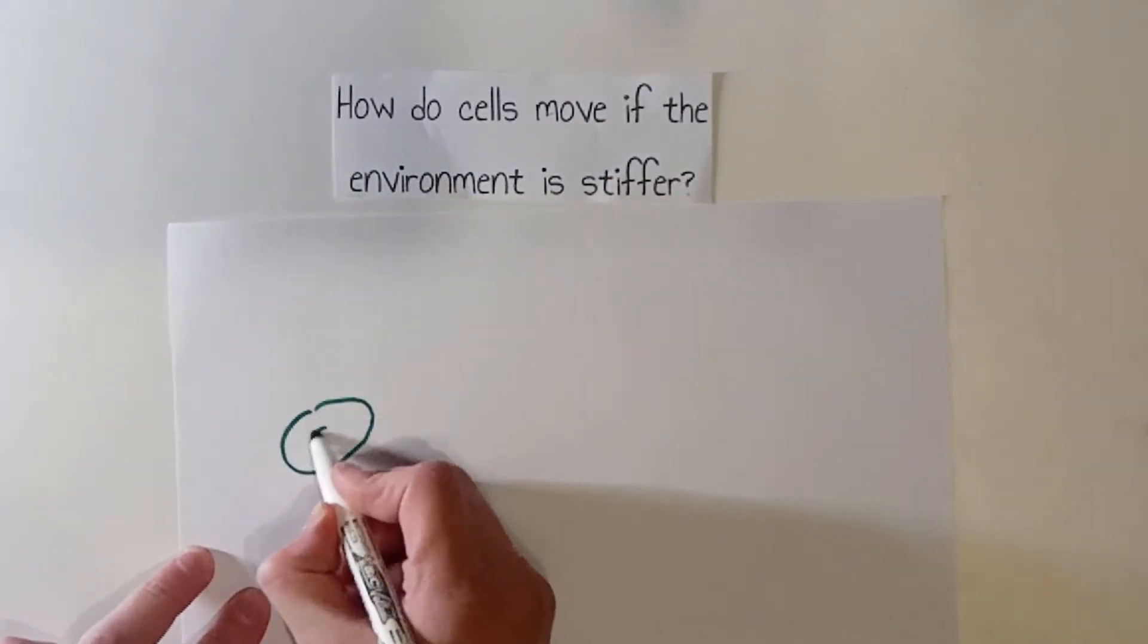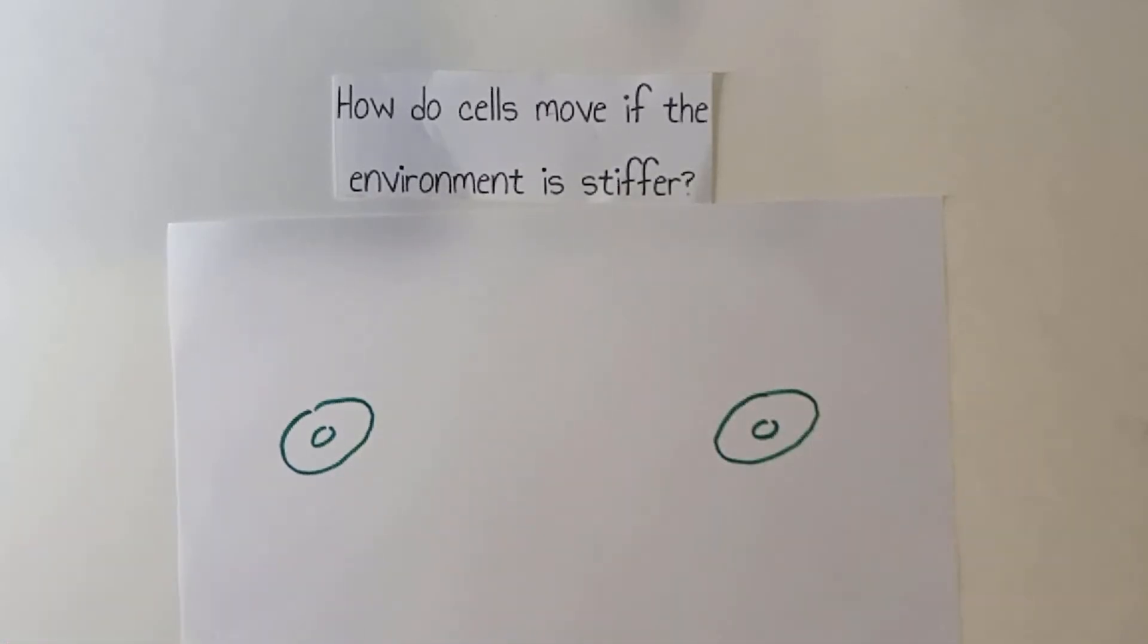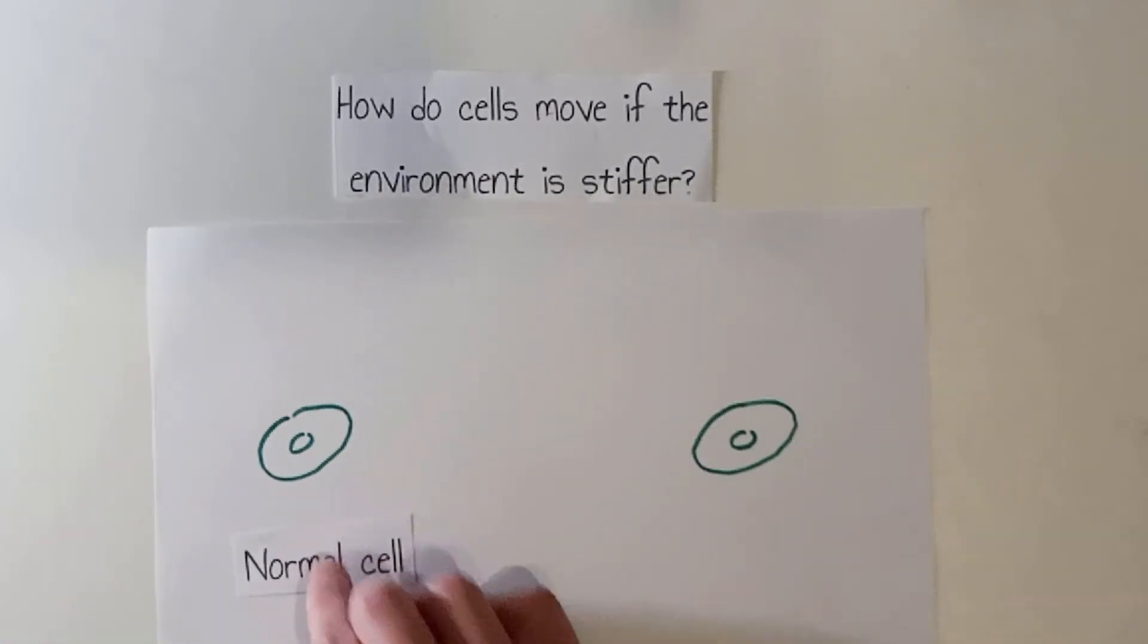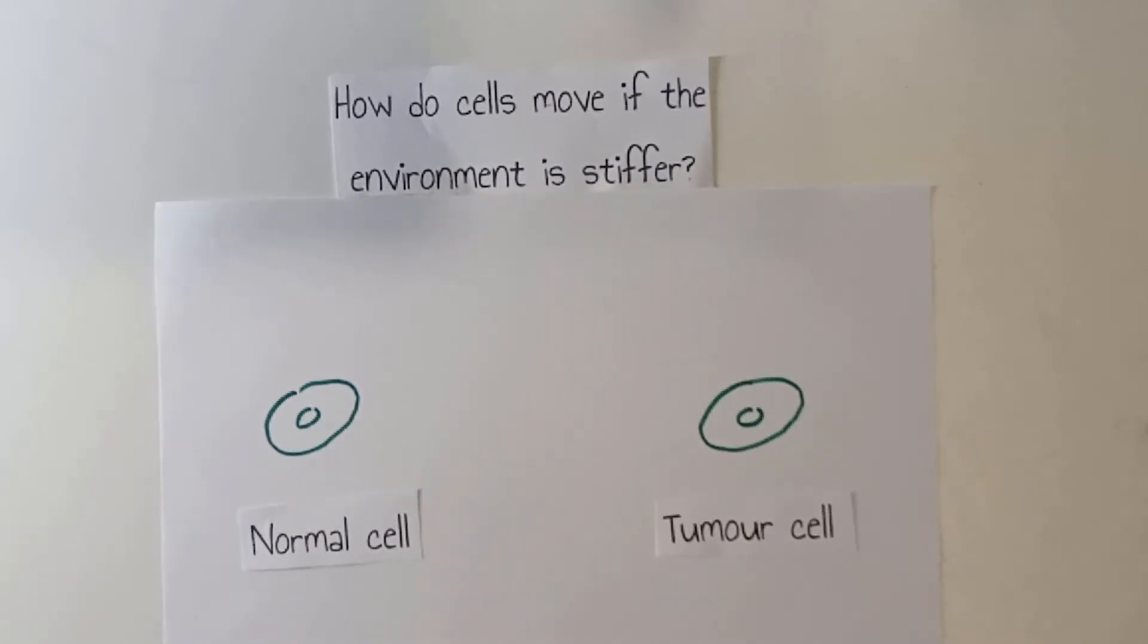To understand that, one can show that cells can squeeze between in the matrix and try to see how cells deform. Let's compare a normal cell on the left and a tumor cell on the right.